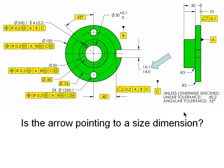The 14.1 to 14 is the width of a feature of size, the width of the key seat, and it would require a position tolerance to keep the center plane of the key seat in line with the datum axis.